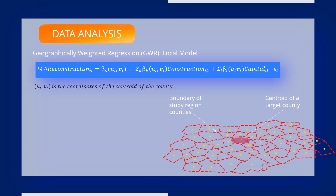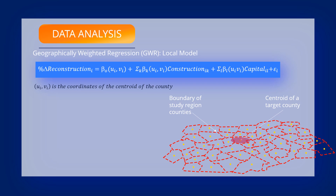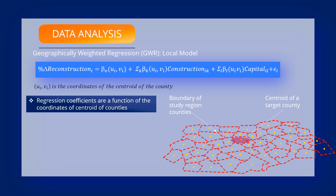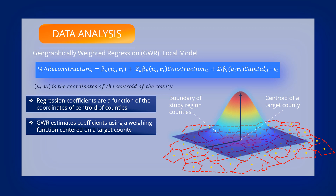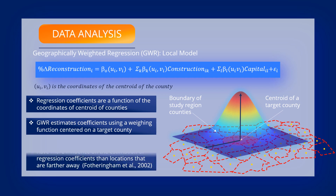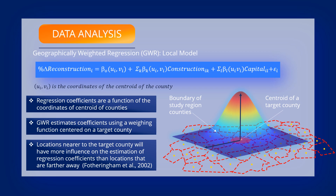The GWR model is a local model which extends OLS regression by adding a location parameter, allowing the regression coefficients to vary across the study region. The regression coefficients are functions of the geographical coordinates of the centroid of each county, and hence are called local coefficients. GWR estimates these coefficients by using a weighting function centered on a target county. Locations near the target county will have more influence on the estimation of the regression coefficients compared to locations that are far away.